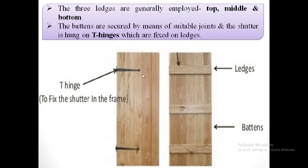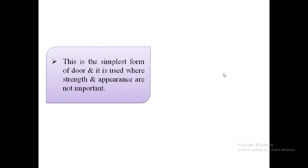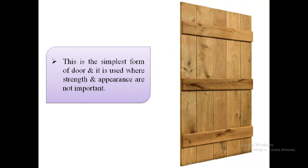In this image we can see T-hinges provided. The battens are secured by means of a suitable joint and the shutter is hung on these T-hinges, which are fixed on the ledges. Ledge doors are the simplest form of door and are used where strength and appearance are not important. This is the actual image of ledge doors, which consists of these vertical boards known as battens and horizontal supports known as ledges.